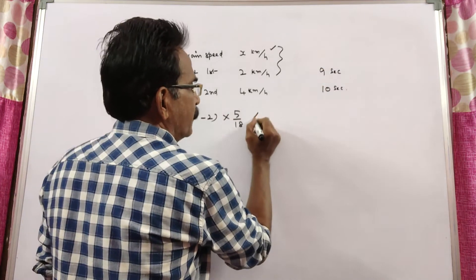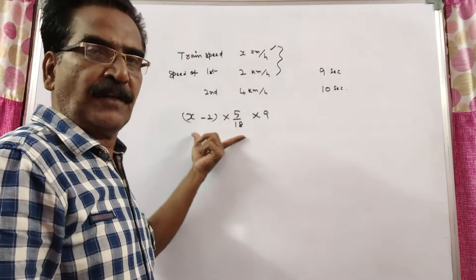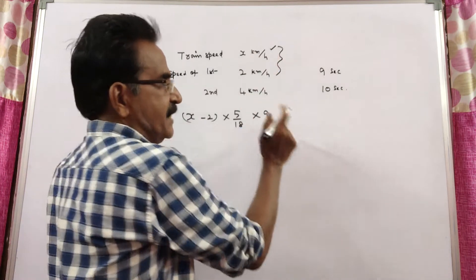Relative velocity into time, it crosses the first man in 9 seconds. So, relative velocity into time, it gives us the length of the train.